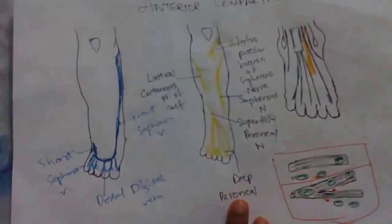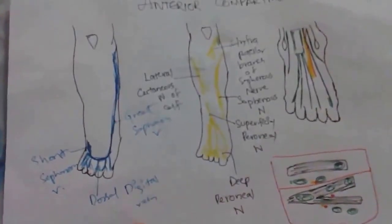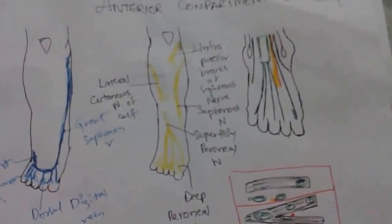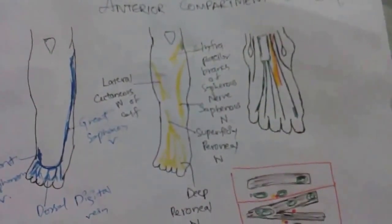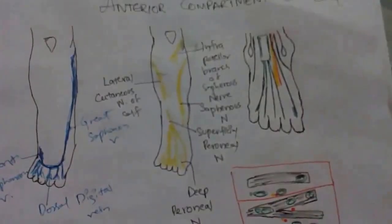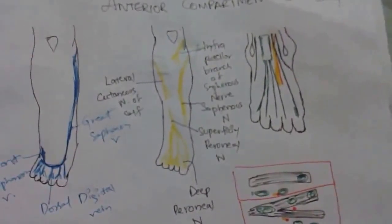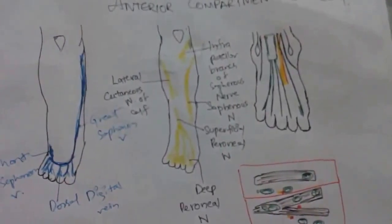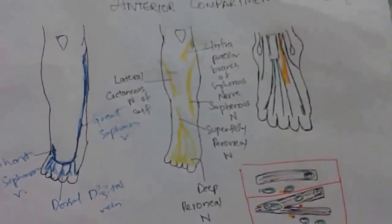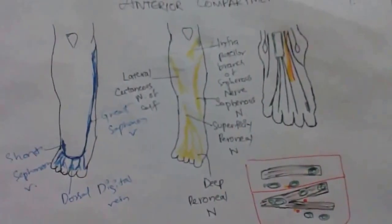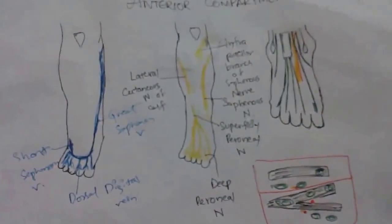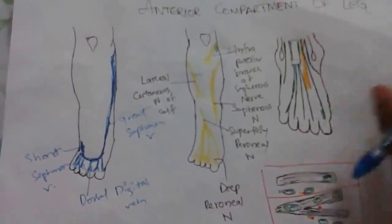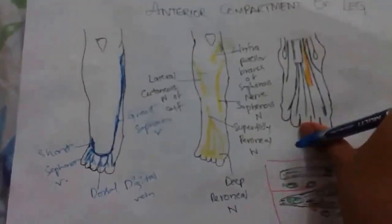All these are the superficial structures visible in the anterior compartment of the leg. Moving to the deep structures: the deep fascia of the leg is very large and very strong, enclosing the leg like a tight sleeve. This deep fascia does not cover the subcutaneous bony surfaces. It forms intermuscular septa, and its extension and modification forms the extensor retinaculum. The anterior compartment of the leg is called the extensor compartment.